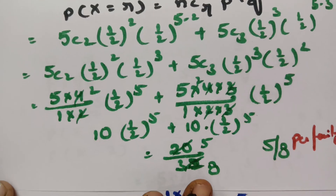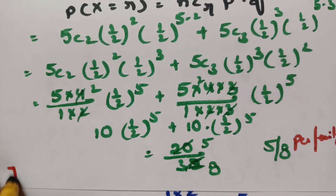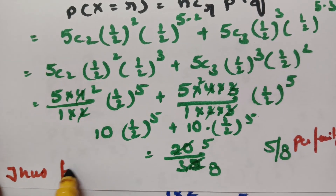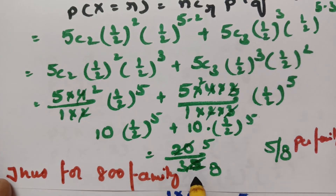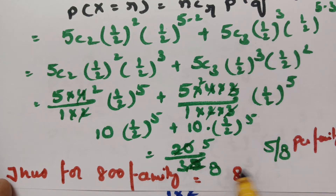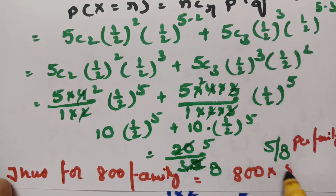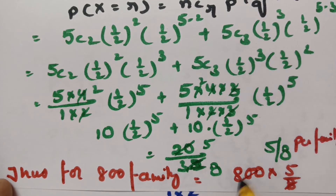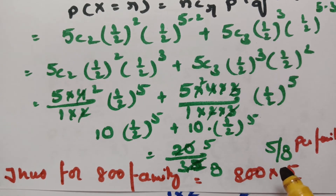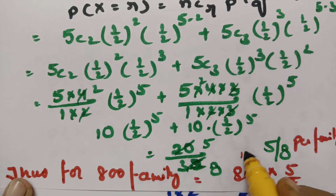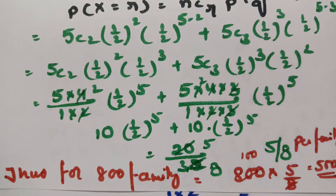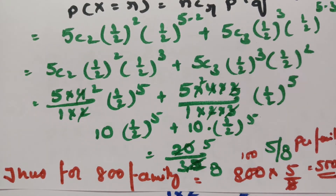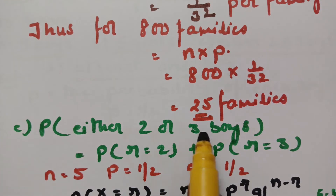For 800 families, the expected number having either 2 or 3 boys is 800 × (5/8) = 500. So out of 800 families, 500 will be expected to have either 2 or 3 boys.